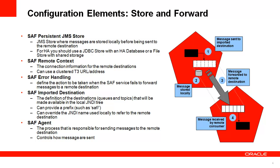I wanted to describe some of the configuration elements for Store and Forward. First is the persistent JMS store. You can choose either a JDBC store or a file store, but a JDBC store gives you more of a highly available infrastructure and makes it easier to migrate messages from one server to another. In addition, there is a Store and Forward remote context which defines the URL that will be used to connect to send messages. For this URL, you can use a cluster T3 URL or address so you can send to a distributed destination on the remote server or cluster.